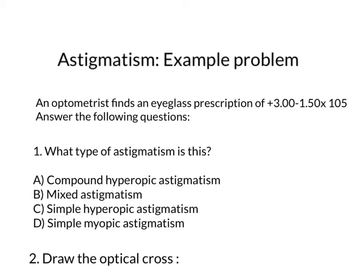So to read off the question: an optometrist finds an eyeglass prescription of plus 3 minus 150 at axis 105. Answer the following questions. The first question is: what type of astigmatism is this? Is it compound hyperopic astigmatism, mixed astigmatism, simple hyperopic astigmatism, or simple myopic astigmatism?